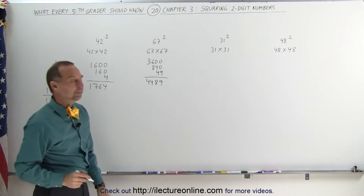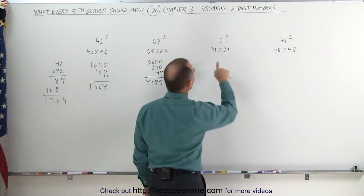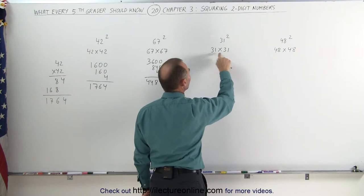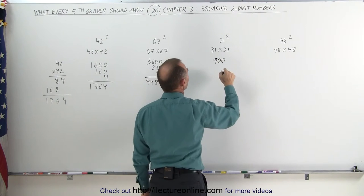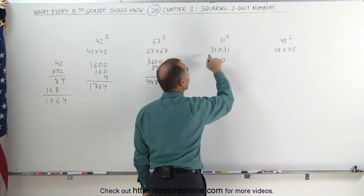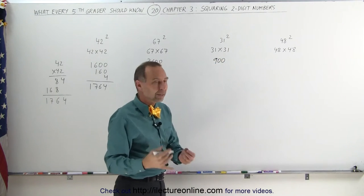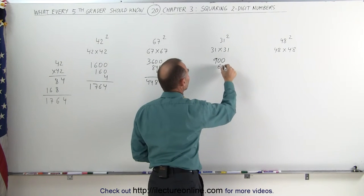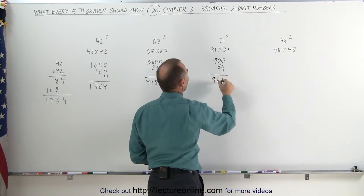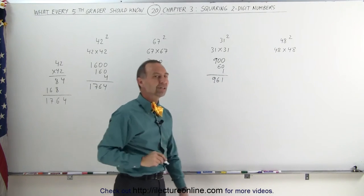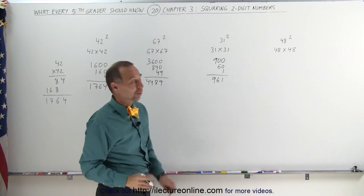How about 31 squared? Same technique again. 30 times 30, you get 3 times 3, that's 9. Add two zeros, you get 900. Now you multiply 1 times 3, or 1 times 30, which is 30. Double that, you get 60. Then you add 1 times 1, which is 1, 961. That was a pretty easy one. When the numbers are smaller, it's of course easier.